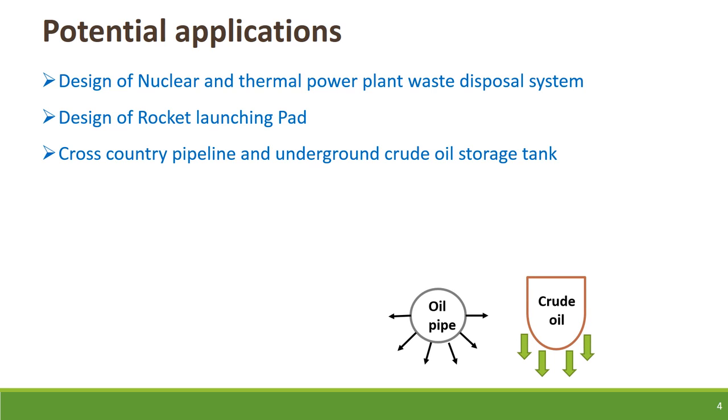Now, let's see what would be the mode of heat dissipation from an oil carrying pipeline or underground crude oil storage tank. Here, you can see that the direction of the arrow describes the possible way of heat migration through the soil from that particular structure.